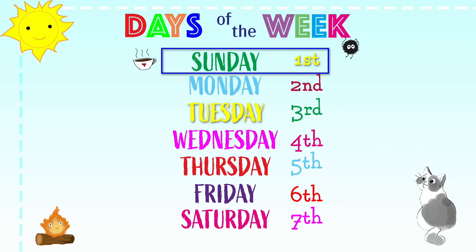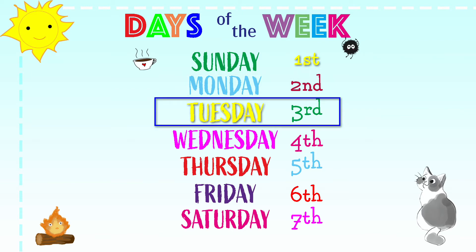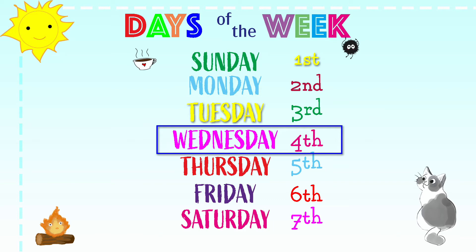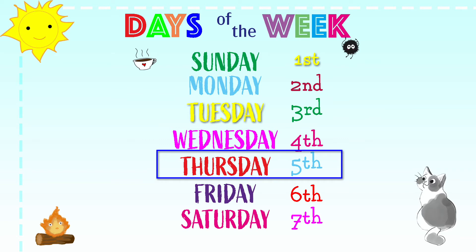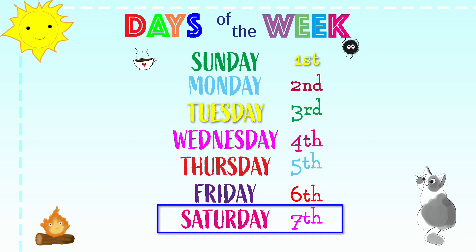Sunday is the first day of the week. Monday is the second day of the week. Tuesday is the third day of the week. Wednesday is the fourth day of the week. Thursday is the fifth day of the week. Friday is the sixth day of the week. Saturday is the seventh day of the week.